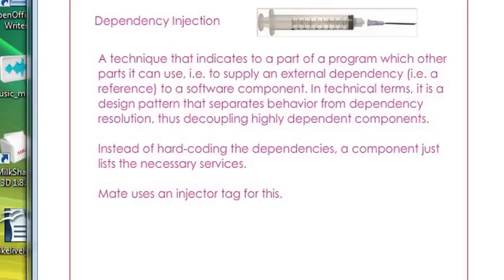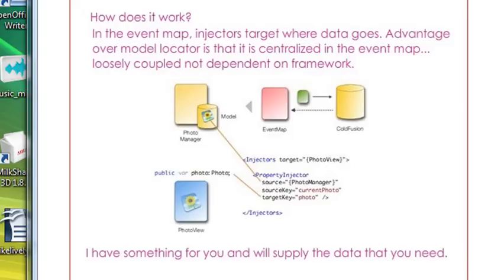Another leg that the MVC architecture stands on is dependency injection. Overall, this is a technique that indicates to a part of a program which other parts it can use. In an event map, injectors target where the data goes.